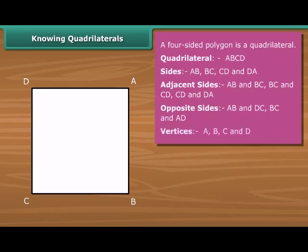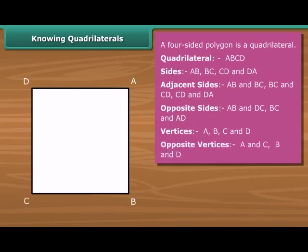The four vertices of quadrilateral ABCD are A, B, C and D. Among them A and C, B and D are opposite vertices.